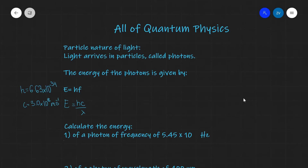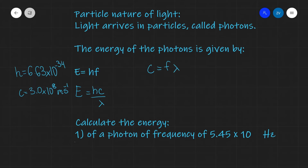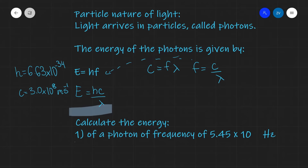First off, in quantum physics, we're dealing mainly with the particle nature of light. The first thing we need to revise is that light arrives in particles — these are packets of energy called photons. The energy of the photon is given by two possible equations. One is E equals hf, where h is Planck's constant, 6.63 times 10 to the power of minus 34. Given that frequency is related to wavelength by the speed of light — C equals f times wavelength — we can rearrange to get f equals C over lambda. Substituting this in gives our second equation: E equals hC over lambda.